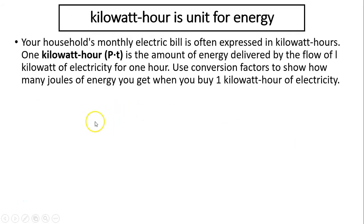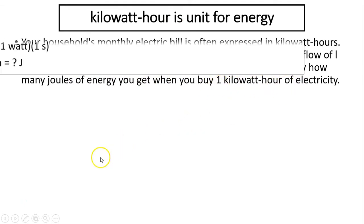Another unit you probably will see sometimes is called kilowatt-hour. Kilowatt-hour, you probably see kilowatt, that's power, right? But this kilowatt-hour is actually a unit for energy. This is power times time. Power times time is a unit for energy. Your household's monthly electric bill is often expressed in kilowatt-hours. One kilowatt-hour, that's power times time, is the amount of energy delivered by the flow of one kilowatt of electricity for one hour. Use conversion factors to show how many joules of energy you get when you buy one kilowatt-hour of electricity.